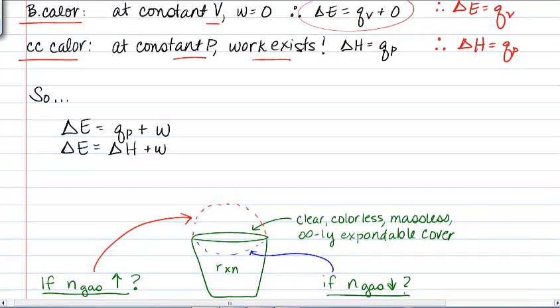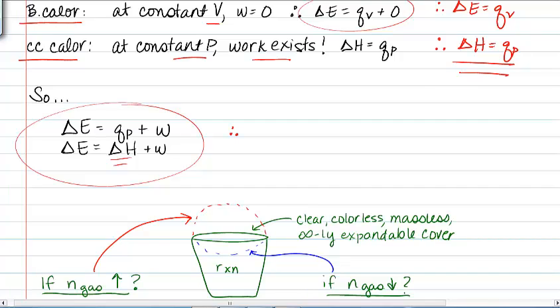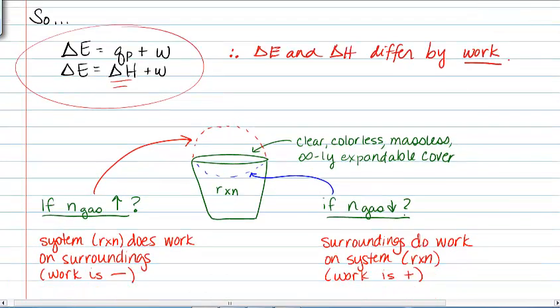Kind of continuing along here, we have these two equations. Q sub P is ΔH because we saw that from up here. But this really comes up with the fact that ΔE and ΔH differ by this idea of work, and what we need to do is to start calculating that.